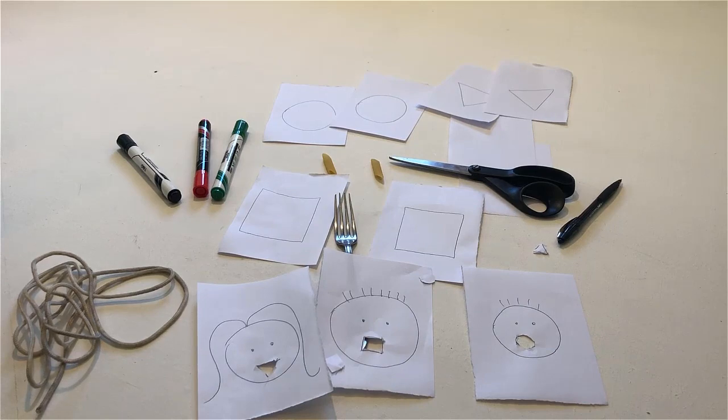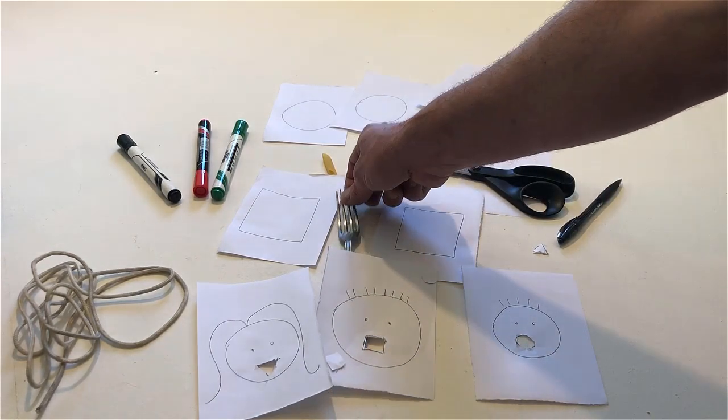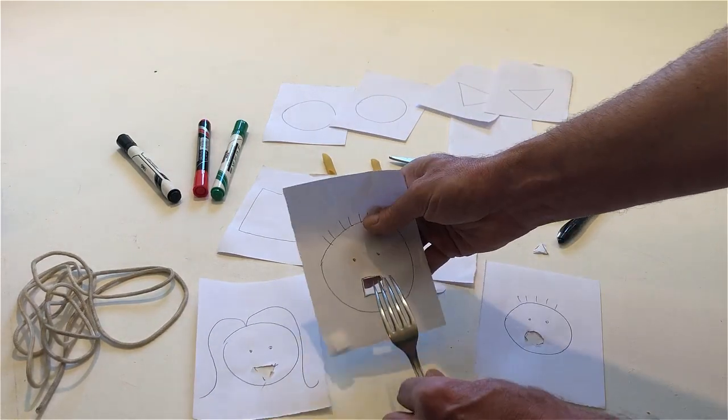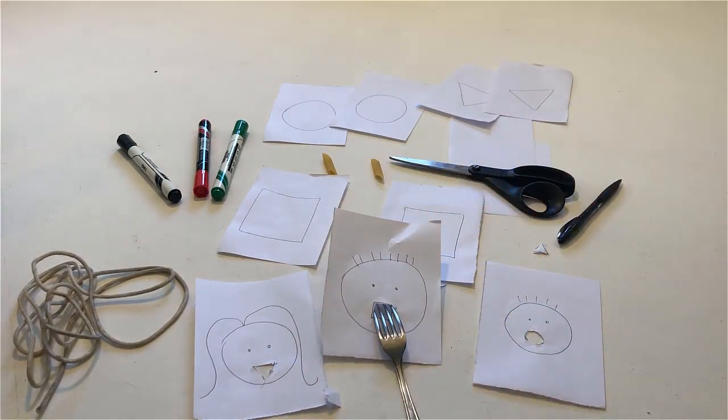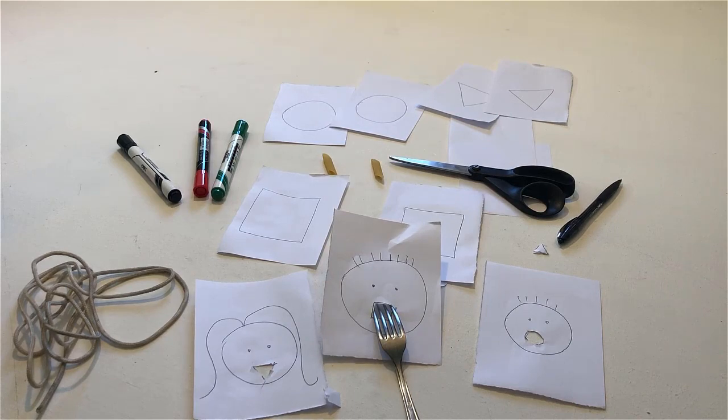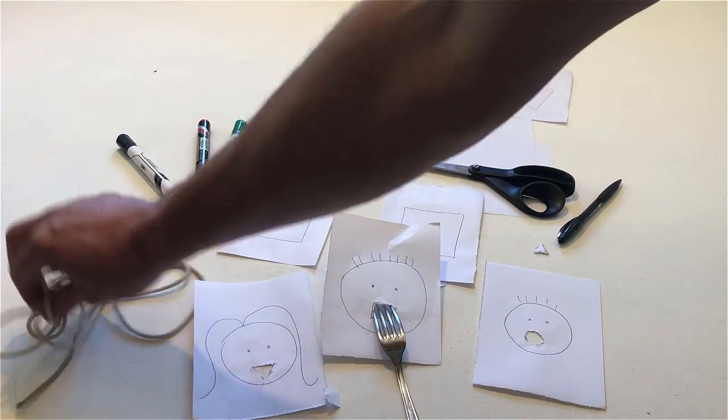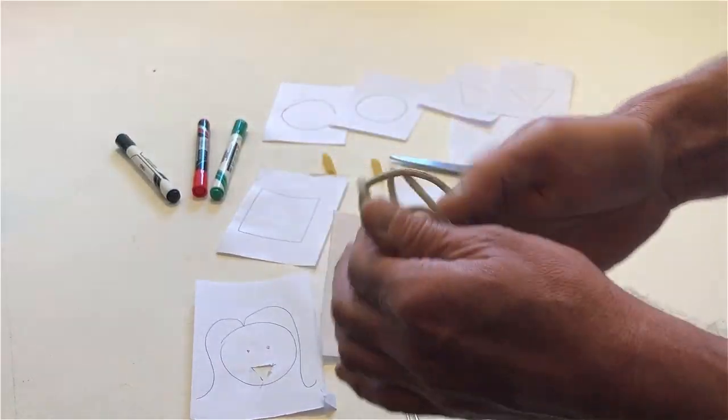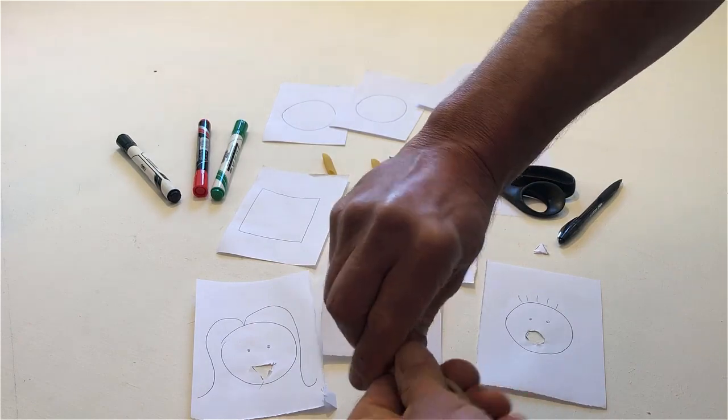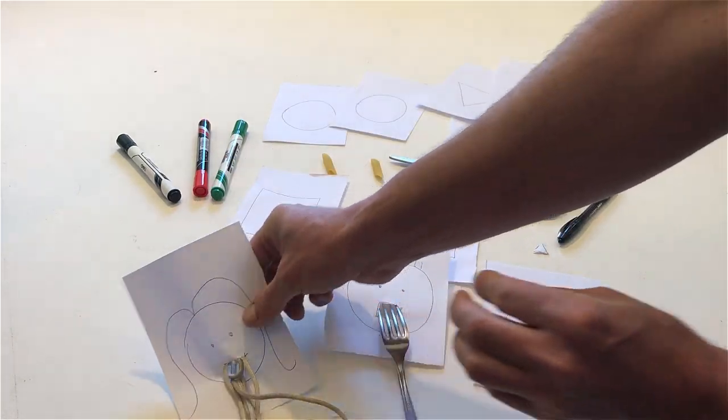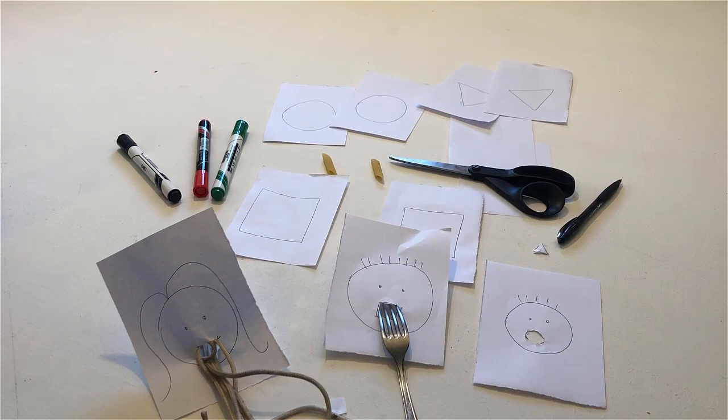Put a fork in the square mouth. Put a piece of string in the triangular mouth. Put a noodle in the circular mouth.